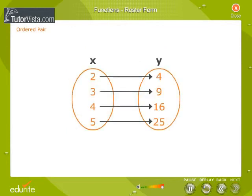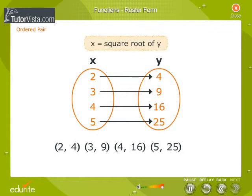Ordered Pair: A pair of objects in a specific order is called an ordered pair. In the relation under consideration, (2, 4), (3, 9), (4, 16) and (5, 25) are said to be the ordered pairs satisfying the relation X is the square root of Y.